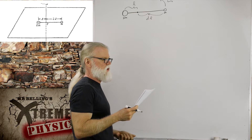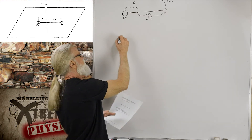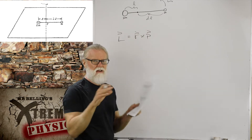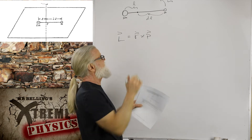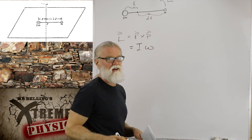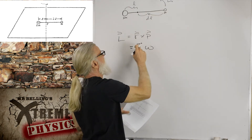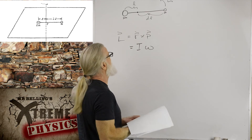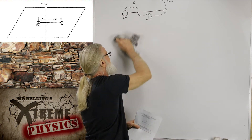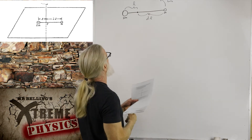Find the initial angular momentum of the system through point P. With angular momentum, we can use R cross P for every little particle, but if you have something rotating about an axis, it's a lot easier to just say L equals I omega, as long as you can find omega and I. We know omega zero, and I we can figure out pretty easily because this is just a couple of masses on massless rods.